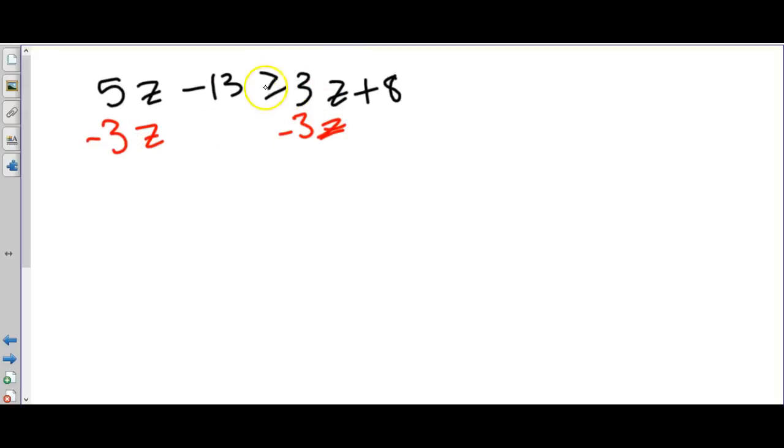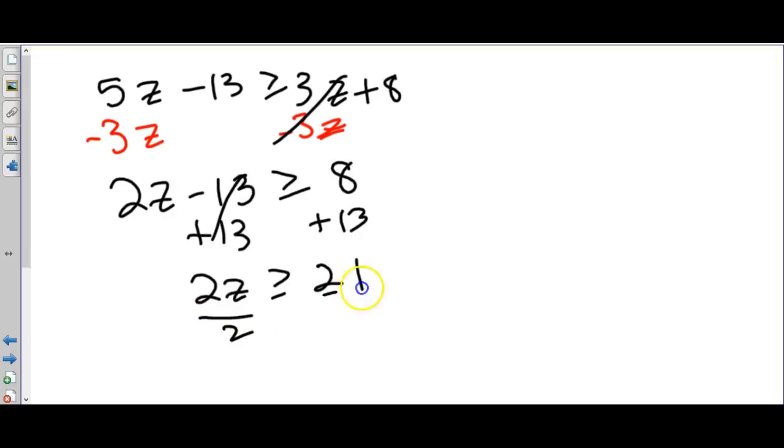Since graphing inequalities usually works better with the variable on the left I always take the right side variable and add or subtract it over to the left. This gives us 2z minus 13 is greater than or equal to 8. Now we can just do our normal opposites. We add 13 to both sides and we're going to have to get rid of that 2, and this time we do divide because we're just moving the 2. We just got rid of the 2, the z stays.